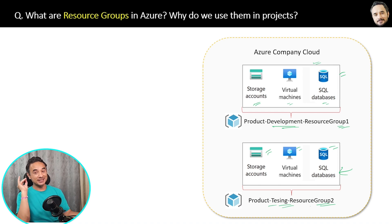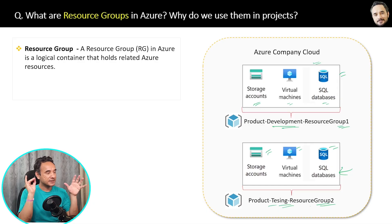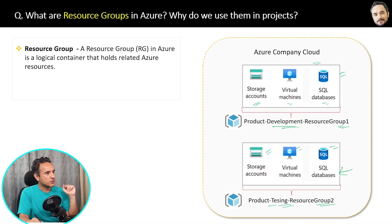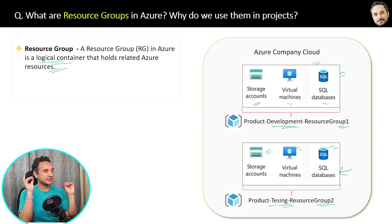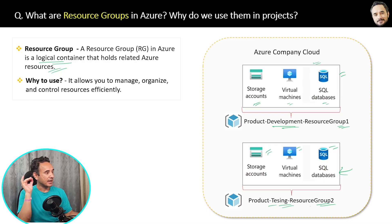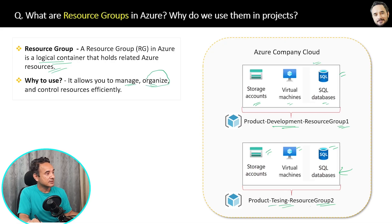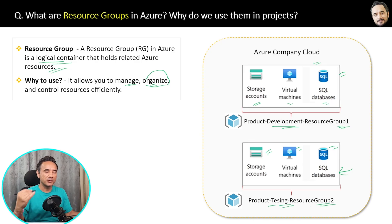Here is the simple definition: a resource group in Azure is a logical container that holds related Azure resources. We use resource groups because they allow you to manage and organize all your resources efficiently and in a better way.